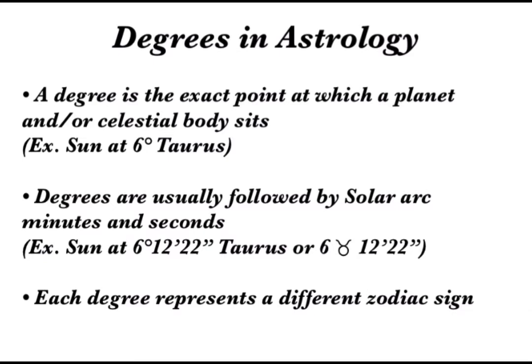Now, it's important to note that each degree represents a different zodiac sign. So 6 degrees, for example, represents Virgo — but we'll get into that in just a second.